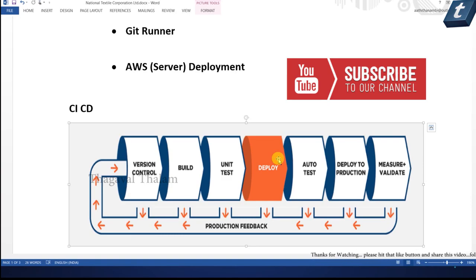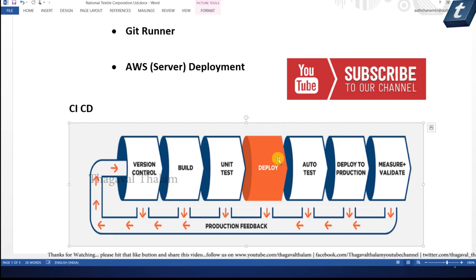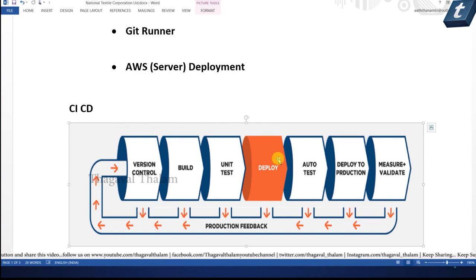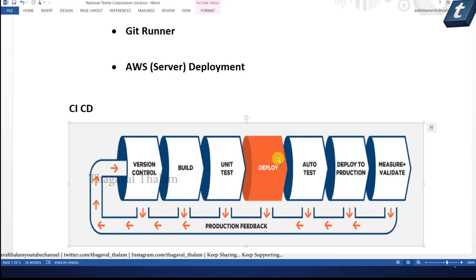At the same time, if you are configuring through mail, you will have an intimation — build fail or build pass. The next step after unit test cases is deployment. In the deployment, you can automatically link the AWS server or digital server version. You can link the GitLab Runners to the server and start a build.